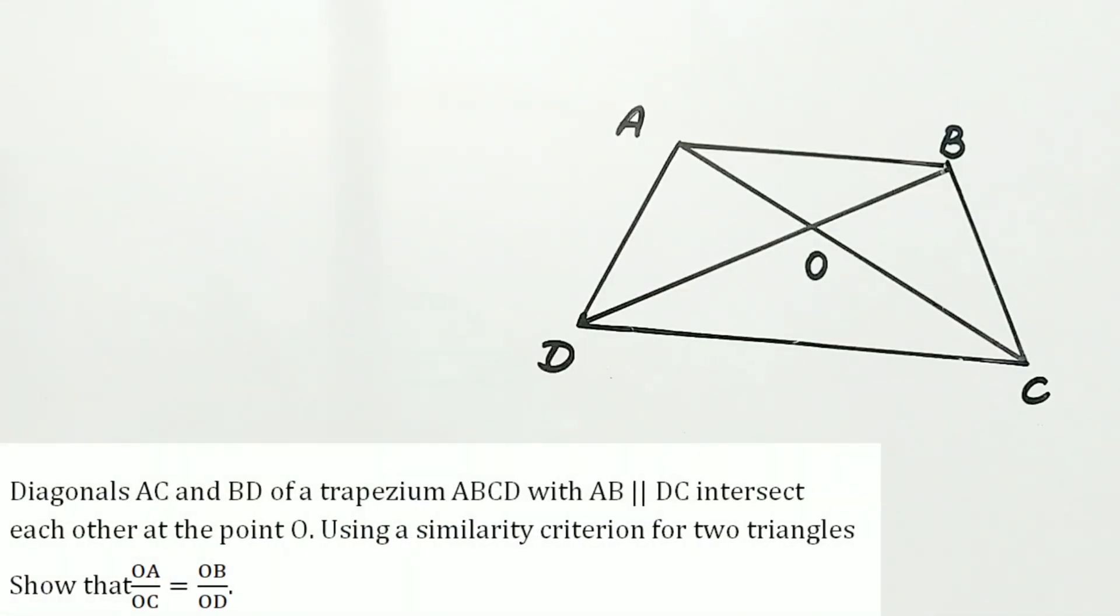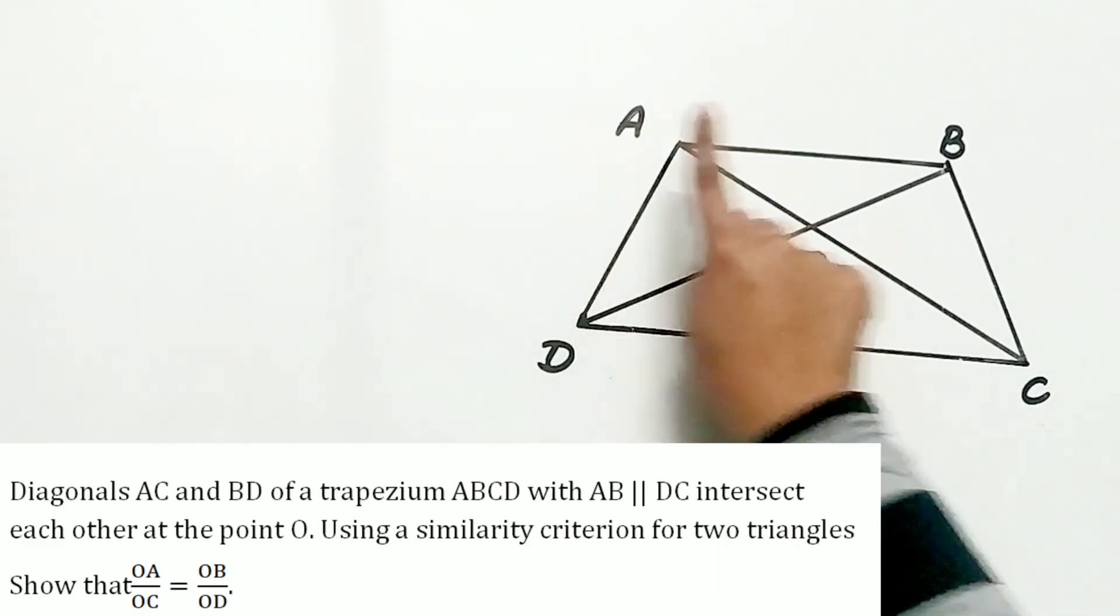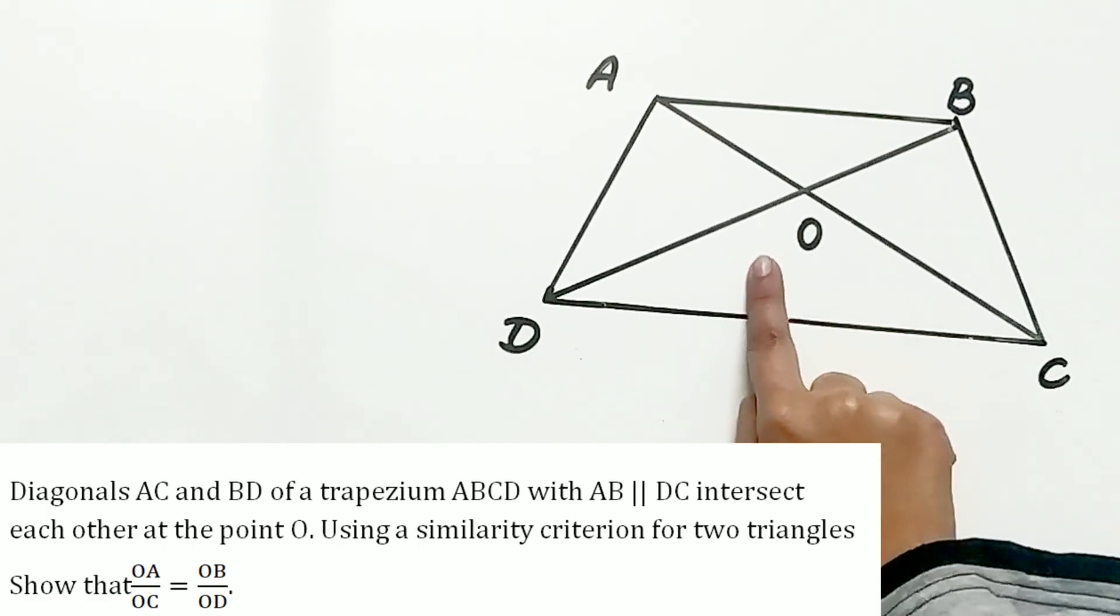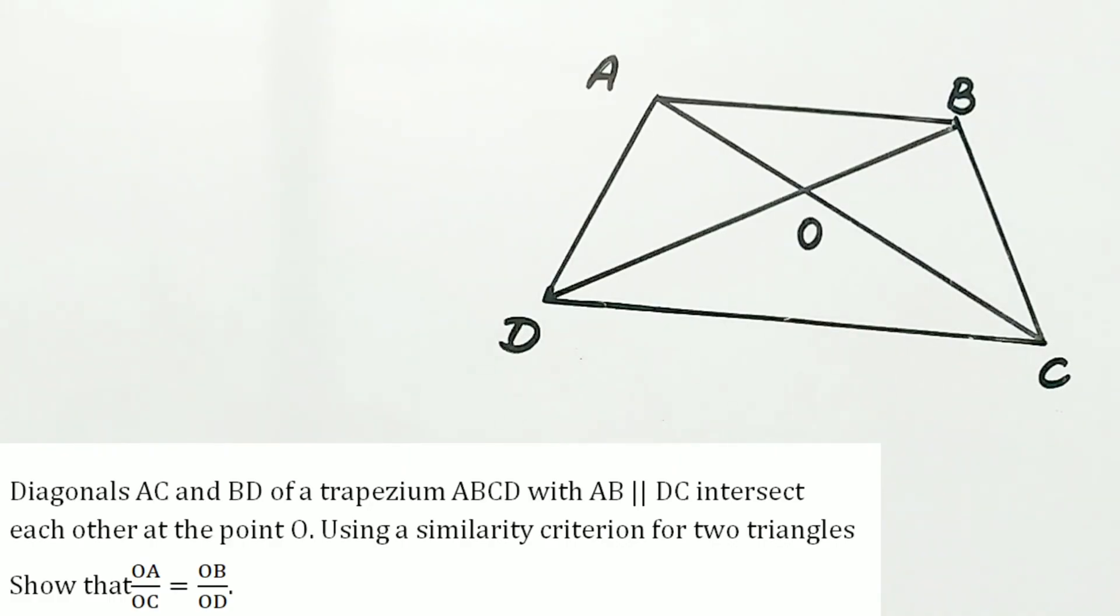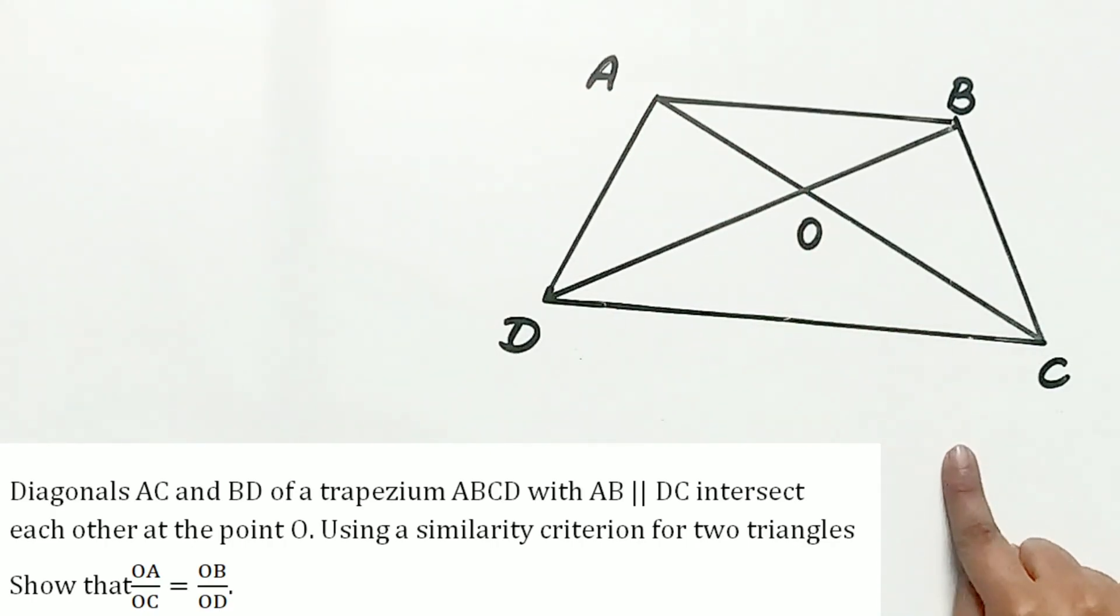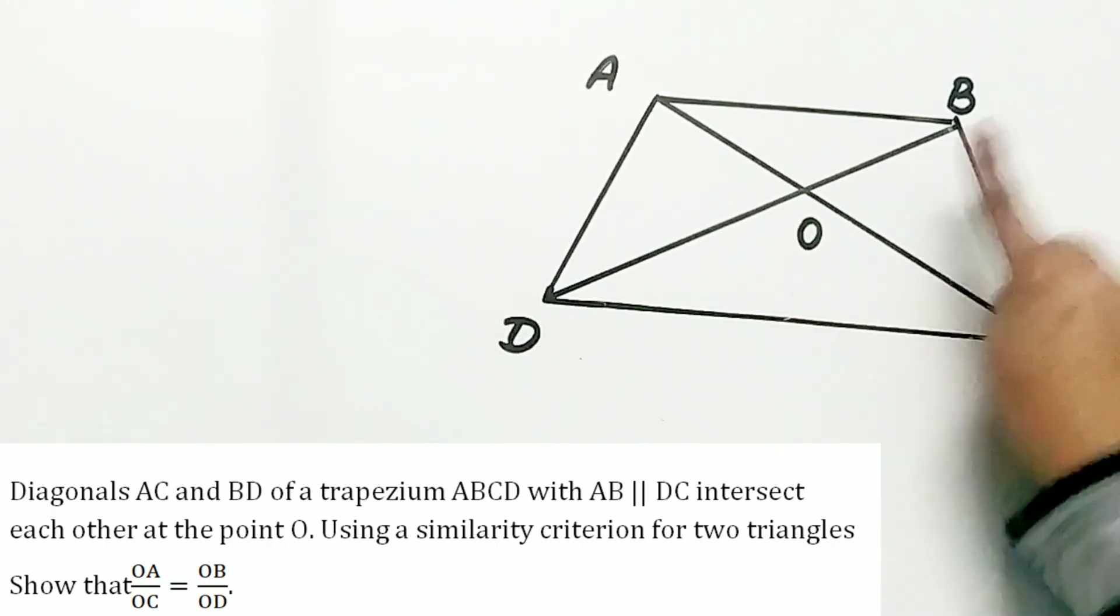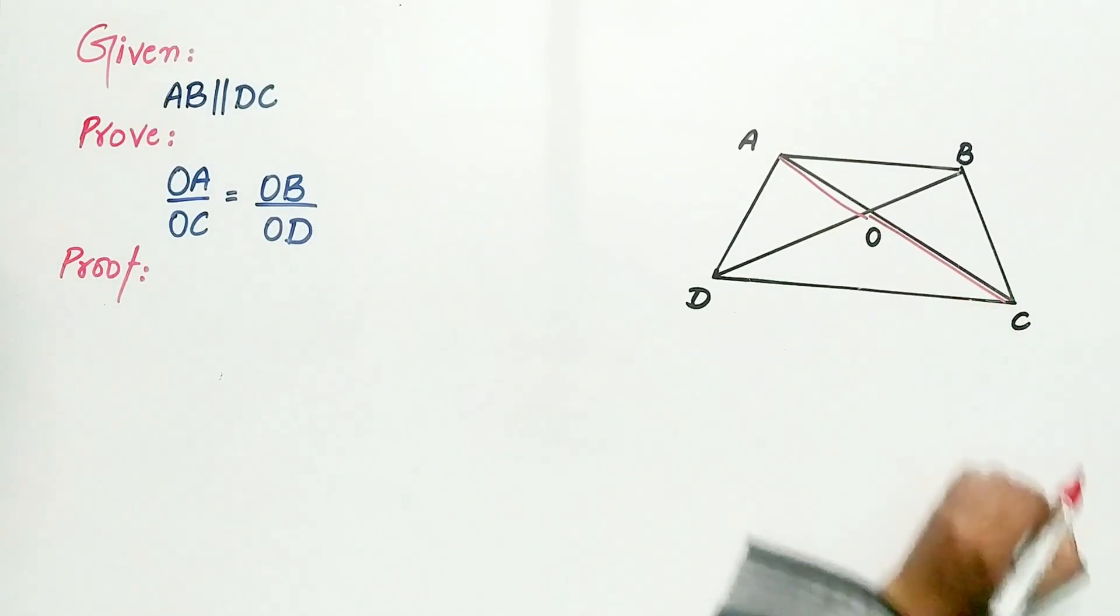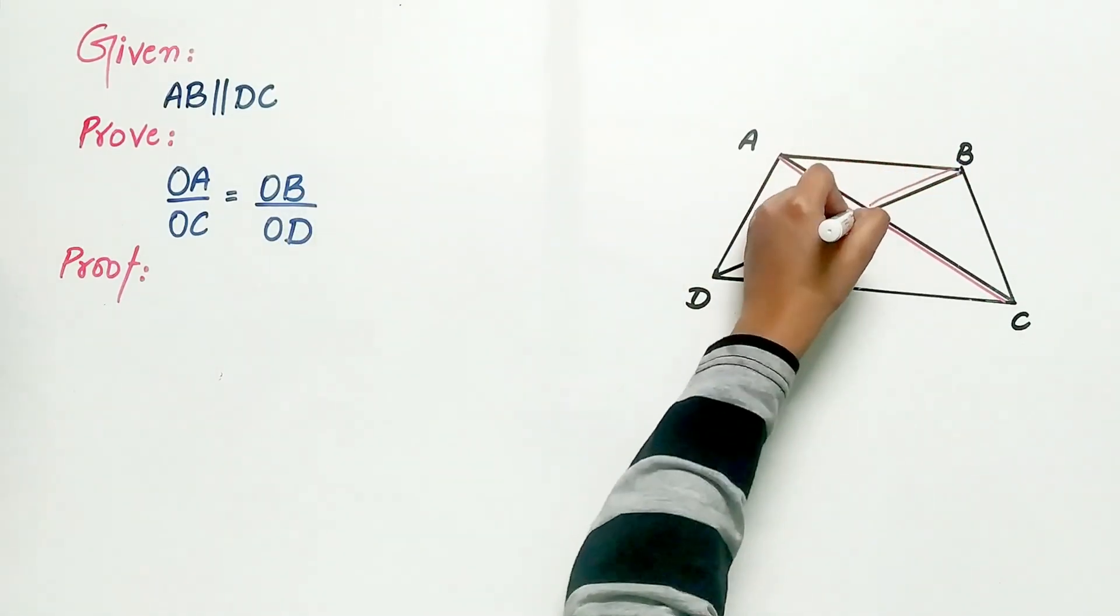Question 3 of exercise 6.3 says diagonals AC and BD of a trapezium ABCD with AB parallel DC intersect each other at point O. Using a similarity criterion for two triangles, show that OA by OC is equal to OB by OD.